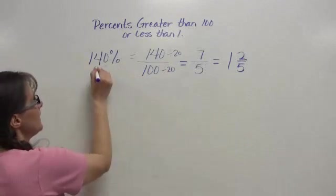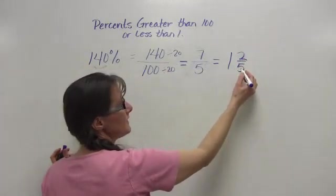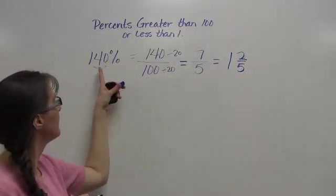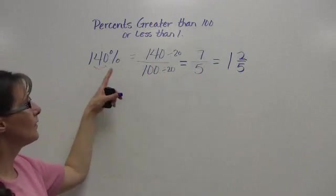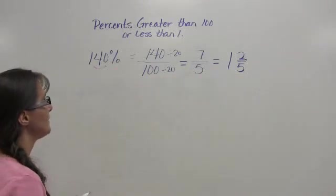The 40 right here comes from dividing two by five. That's going to give you .40. And again, that's why any time you have a percent greater than 100, you're going to get a mixed number as a fraction.